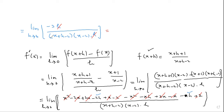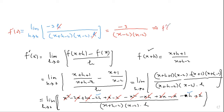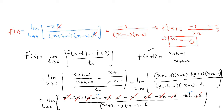After cancelling h, we apply the limit by replacing h with zero. The result is -3 over (x-2)(x-2), which is -3 over (x-2) squared. This is f prime of x. Plugging in x equals five: f prime of 5 equals -3 over (5-2) squared equals -3 over 9, which is -1/3. This is the slope m using the limit definition.